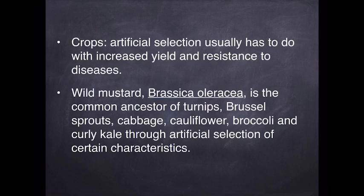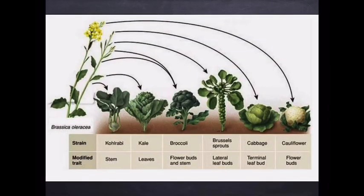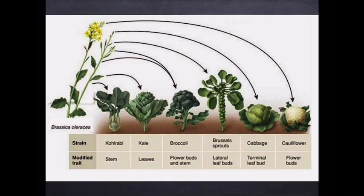If we look at plants, we have artificially bred plants as well. The easiest example is the brassicas. The original plant is wild mustard, Brassica oleracea, from which we have artificially bred many varieties by selecting different characteristics. Breeding for the stem gives us kohlrabi; breeding for the leaves gives us kale; breeding for flower buds with stems gives us broccoli; breeding for leaf buds gives us Brussels sprouts; selecting for only the terminal leaf bud on a very short stem gives us cabbage; and selecting for just the flower buds with very short stems gives us cauliflower. These are all brassicas, all artificially selected from the original wild mustard.